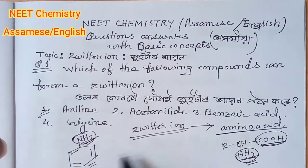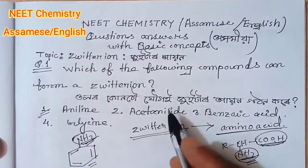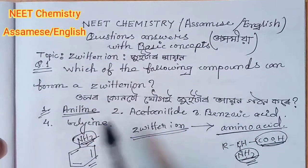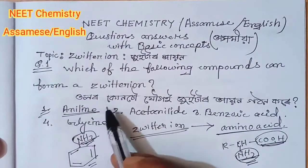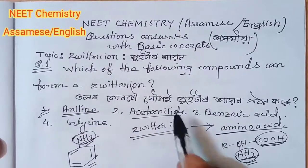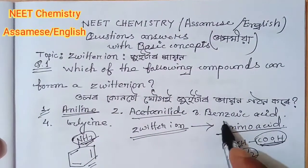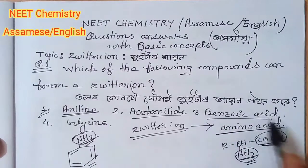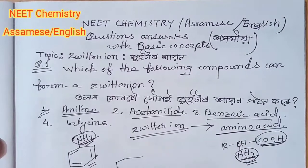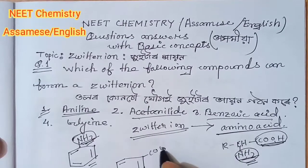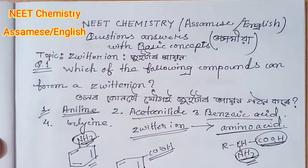If you have aniline, you don't have both carboxyl and aniline groups — remember, there are other changes. When you have aniline, you don't have a carboxyl group. Benzoic acid has benzene and COOH — this is the functional group.